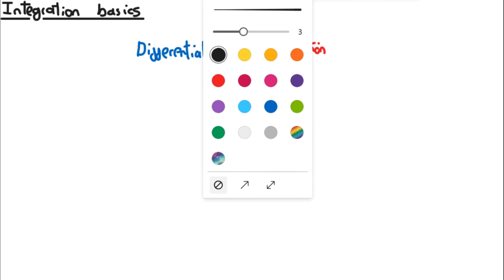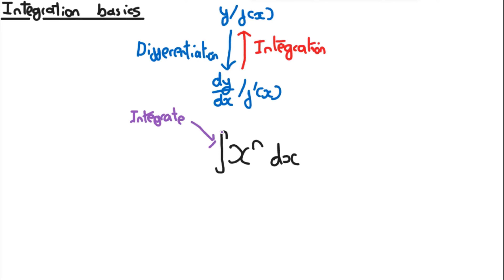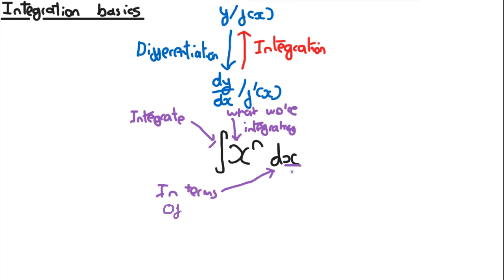So, let's say that we had the function x to the power of n, and we wanted to integrate this function. We would write this as the integral symbol, then x to the power of n — whatever we're integrating — and then dx. This symbol just means 'integrate', x^n is what we're integrating, and dx means what we're integrating in terms of. In this case, we're integrating in terms of x.